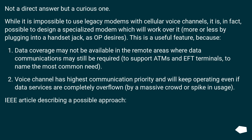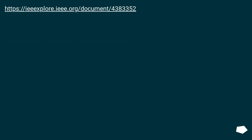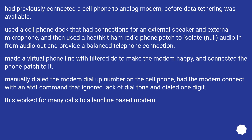There is an IEEE article describing a possible approach. Someone had previously connected a cell phone to an analog modem before data tethering was available. They used a cell phone dock with connections for an external speaker and external microphone, and then used a Heil or similar radio phone patch to isolate audio-in from audio-out and provide a balanced telephone connection. They made a virtual phone line with filtered DC to make the modem happy, manually dialed the modem dial-up number on the cell phone, and had the modem connect with an AT command that ignored the lack of dial tone and dialed one digit. This worked for many calls to a landline-based modem.